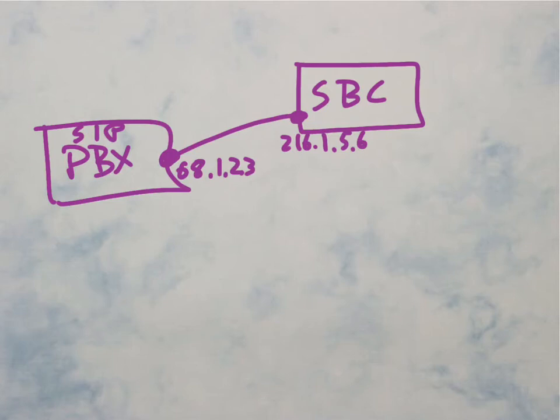So we're just going to assume for today that this is a public IP address because that's a common kind of requirement. Then of course, the SBC in the conventional kind of way is connected to our VoIP core network.